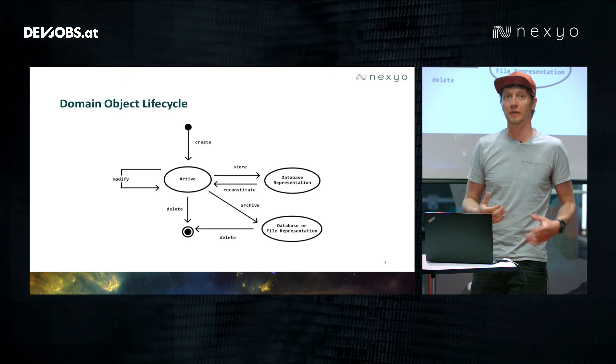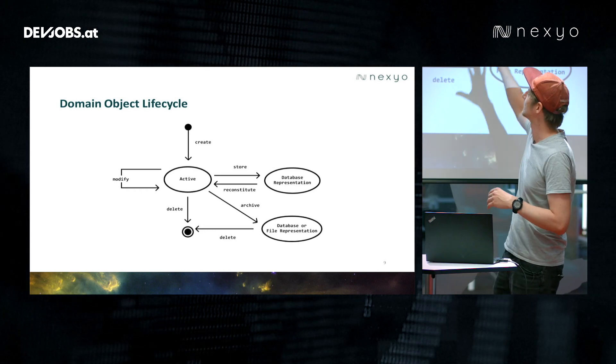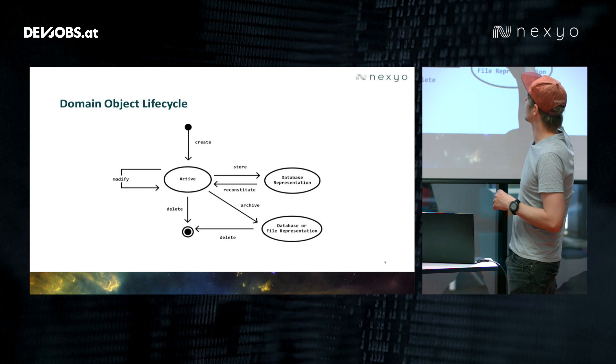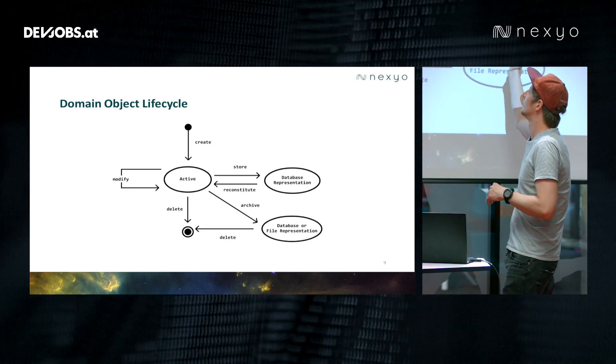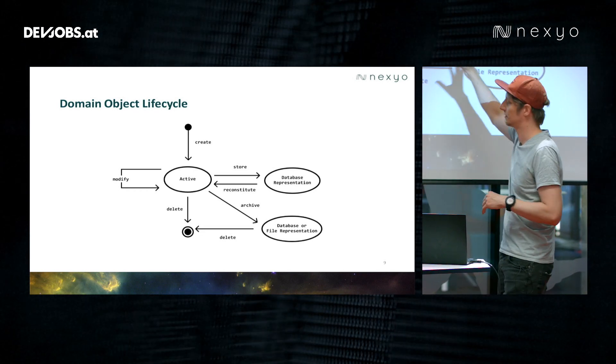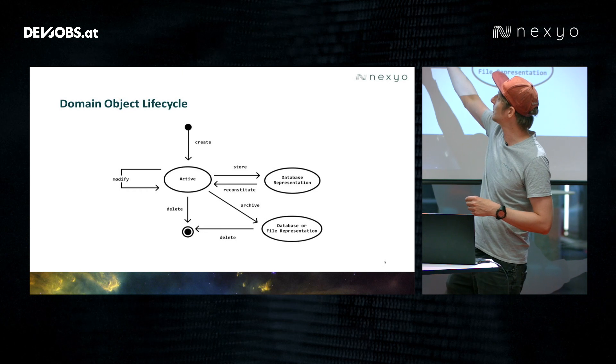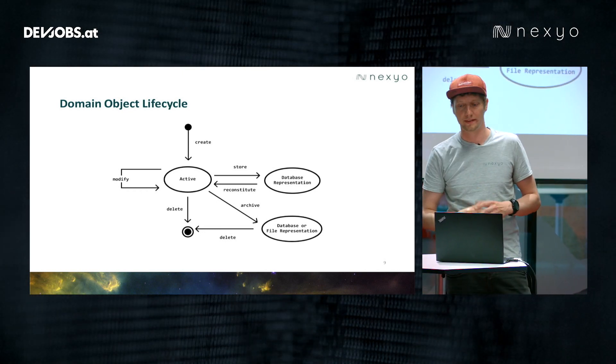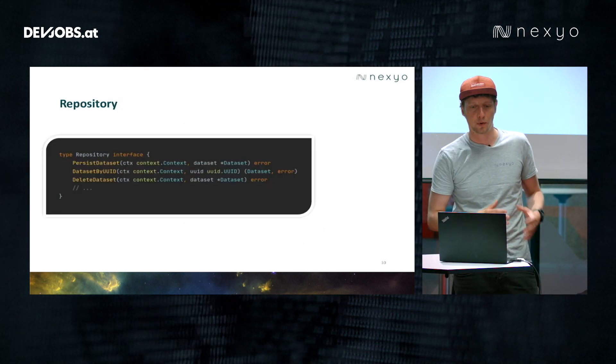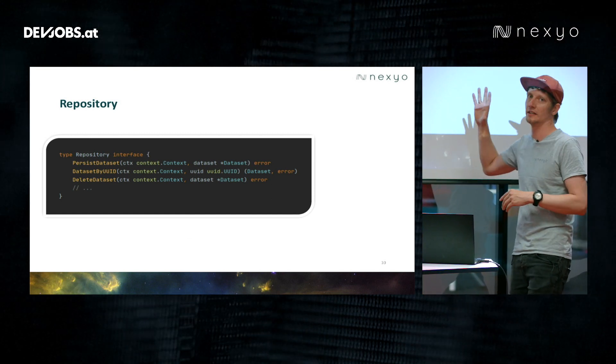When you work a lot with domain objects you also have to think about the domain lifecycle. You start at the top: you create the domain object, then you store it in a database, bring it back, modify it, store it again. And if the end of the lifecycle is reached, maybe archive it and then delete it. Looking at the lifecycle, you need two pieces: something which creates objects, and something which stores them to a database. That's where two patterns come into play, the first being the repository pattern. This pattern starts with an interface in the domain space — it says what should be possible: persisting a dataset, getting back a dataset by UUID, deleting a dataset. These are interface definitions, with no definition yet of how they are implemented.